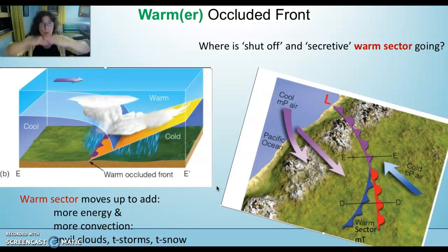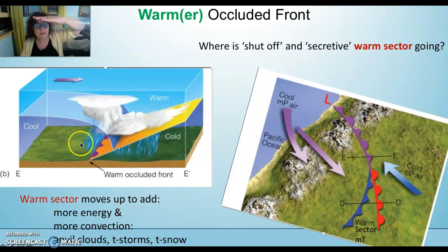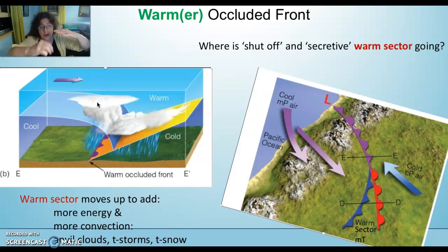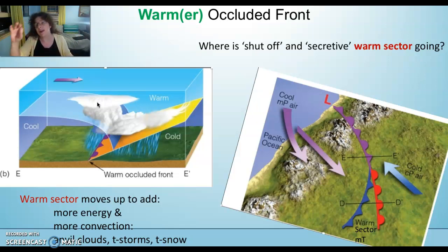Where did that secretive warm sector go? Same place — it went up so it's not seen at the surface anymore, but that warm sector provides more energy for this occluded front, more convection. You'll get anvil clouds, thunderstorms, thundersnow. The key difference between the cold occluded front and the warm occluded front is the position of the occluded front at the surface. In the cold occluded front, the occluded front is in front of the warm front. In warm occluded fronts, the occluded front is behind the piggyback.